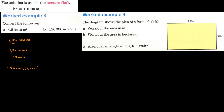We can also convert 150,000 meters square to hectares. Since we are converting to a bigger unit, we divide. So 150,000 divided by 10,000: simplifying, that is 15. Therefore 150,000 meters square equals 15 hectares.